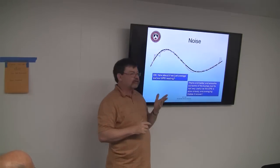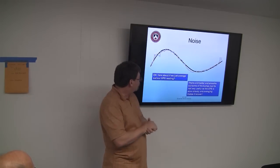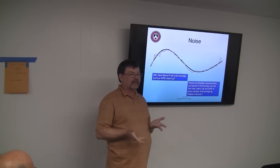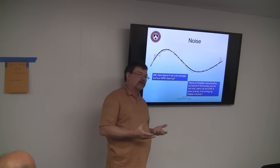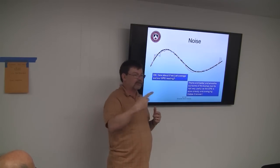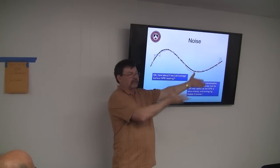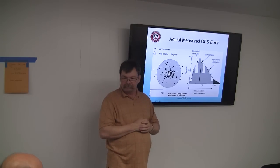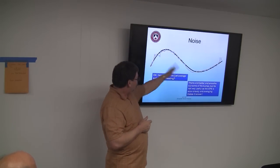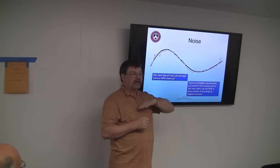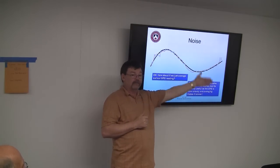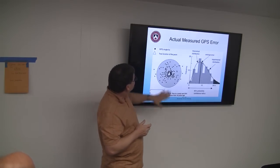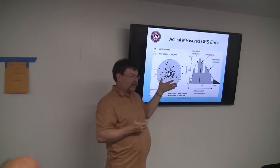What if we just average the readings from time to time to average out this error? You can do that, but you'll end up with a meandering path. It gets rid of the bumps and the jumps, but it's still not very useful, because the worst thing it does is slow down your sensor capability. The GPS is already slow, and averaging will put it even further behind the vehicle.